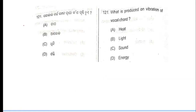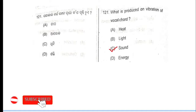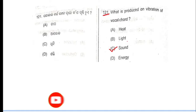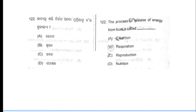Question number 121: what is produced on vibration of vocal cord? Vocal cord vibration produces sound. Question number 121, option number C is the correct answer. Now moving to next question.